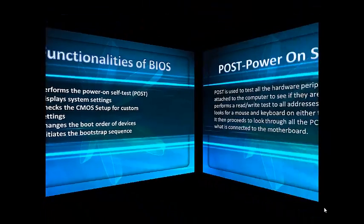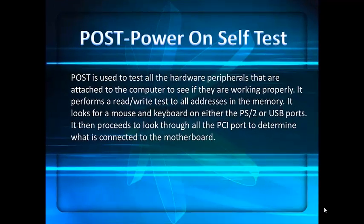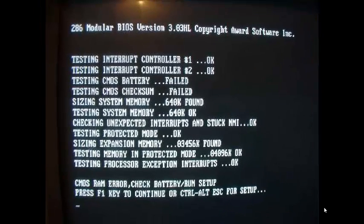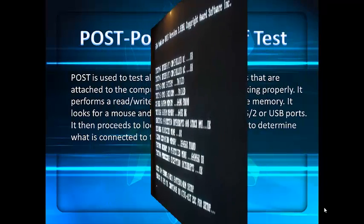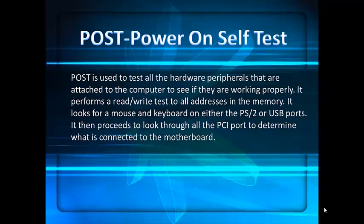Power-on self-test is used to test all the hardware peripherals attached to the computer to see if they are working properly. It performs a read or write test to all the addresses in memory. It looks for a mouse and keyboard on either the PS/2 or USB ports, then proceeds to look through all the PCI ports to determine what is connected to the motherboard.